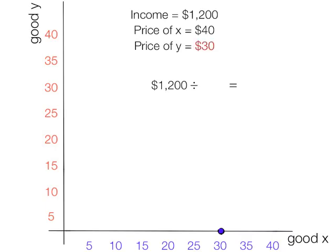Now we take income divided by the price of Y, or the unit price of Y, and that is equal to 40 units, which is that point right there. And it's simple enough, now we take these two dots and we just put in a line, and that's called our budget line right there, the purple line is our budget line.